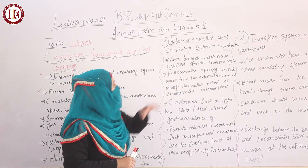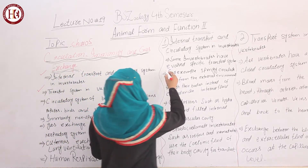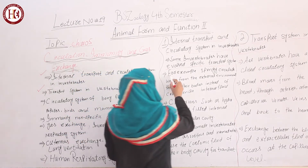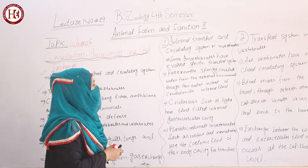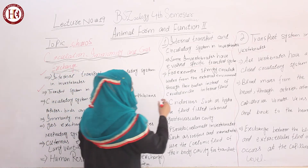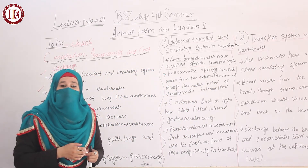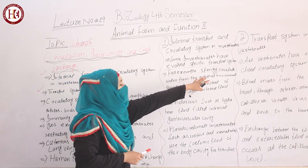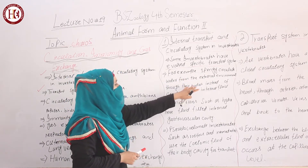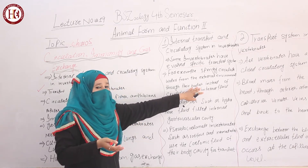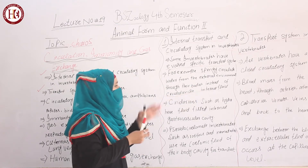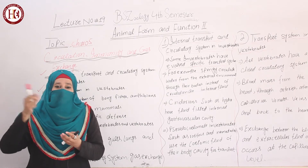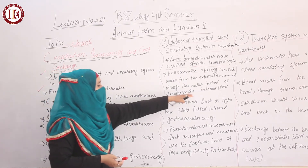Some invertebrates have evolved specific transport systems. In these specific transport systems, only specific material is transported. For example, in sponges, external environmental water is circulated through their body from the external environment, instead of an internal fluid. So in sponges, only water from the external environment is circulated.